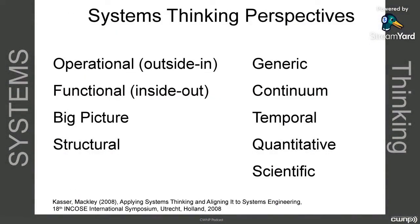We've defined our system, but we also need to realize that there are various systems thinking perspectives — ways to think about systems thinking. One of the best summaries of this was in a 2008 paper called 'Applying Systems Thinking and Aligning it to Systems Engineering' by INCOSE. If you're not familiar with INCOSE, it's an organization entirely focused on systems engineering. They have a lot of great papers, books, articles, and information at their website. The focus of this paper was on how to align systems thinking with systems engineering, and they gave nine different systems thinking perspectives.